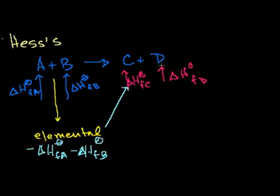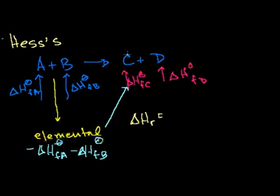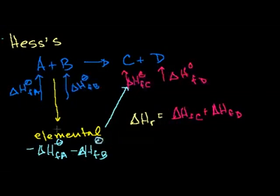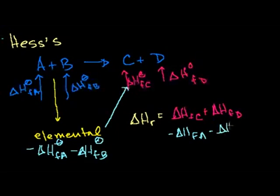So Hess's Law tells us that the delta H of this reaction is essentially the sum of what it takes to decompose the reactants — which is the minus heats of formation of A and B — plus what it takes to reform the products. So: delta H of formation of C, plus delta H of formation of D, minus delta H of formation of A, minus delta H of formation of B.